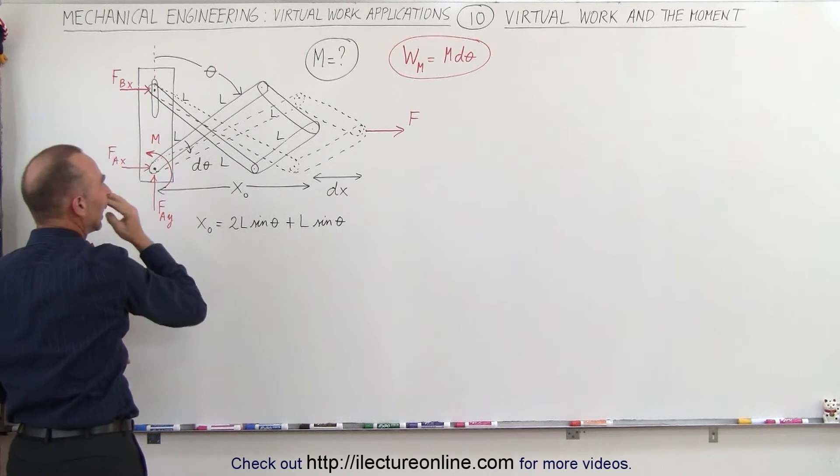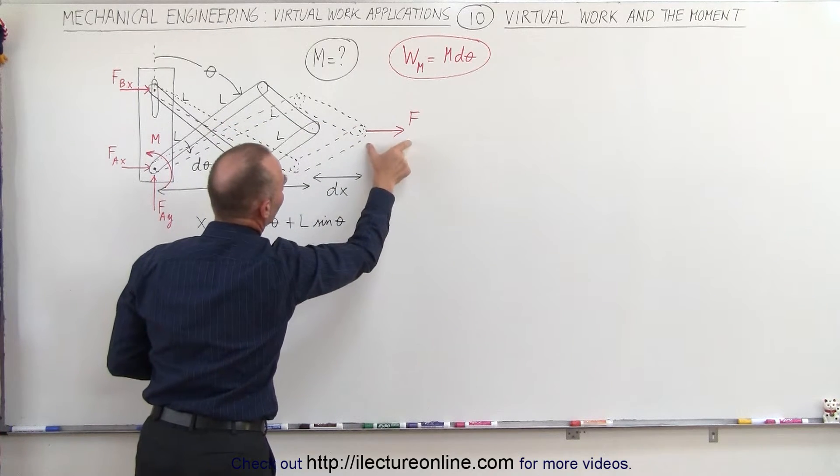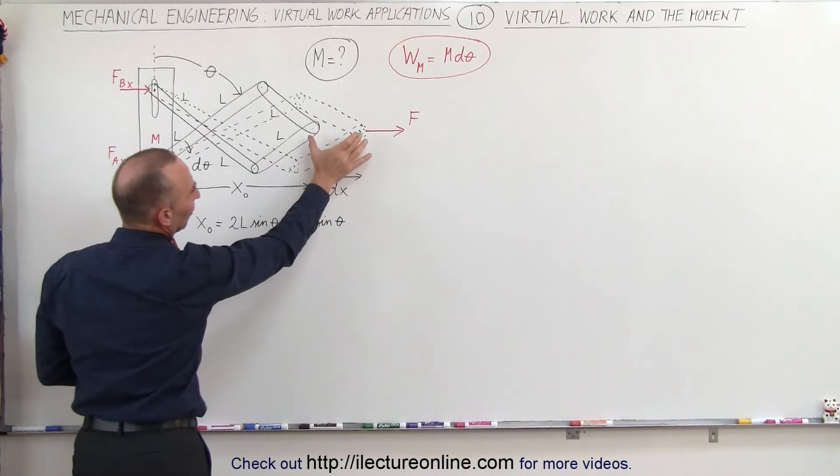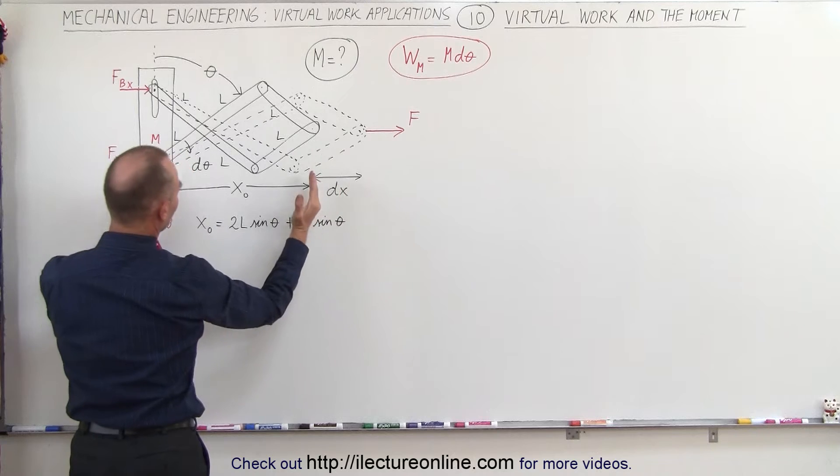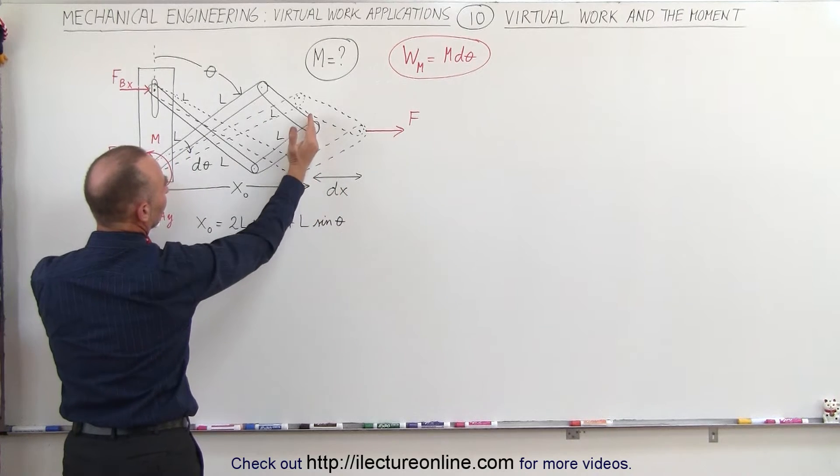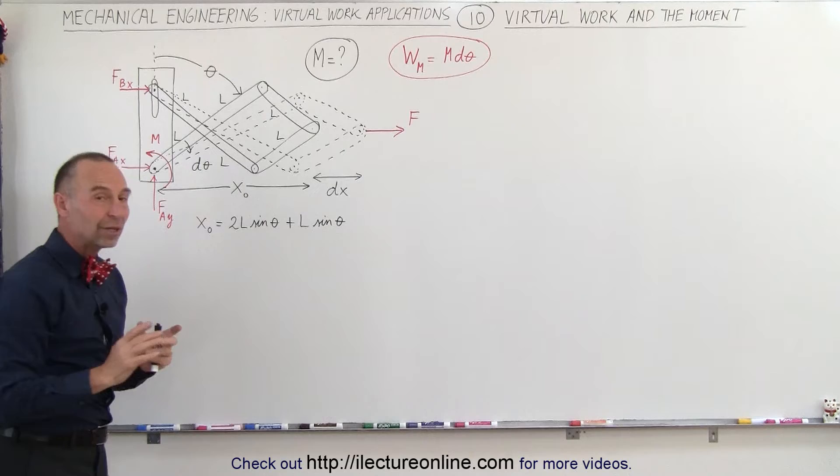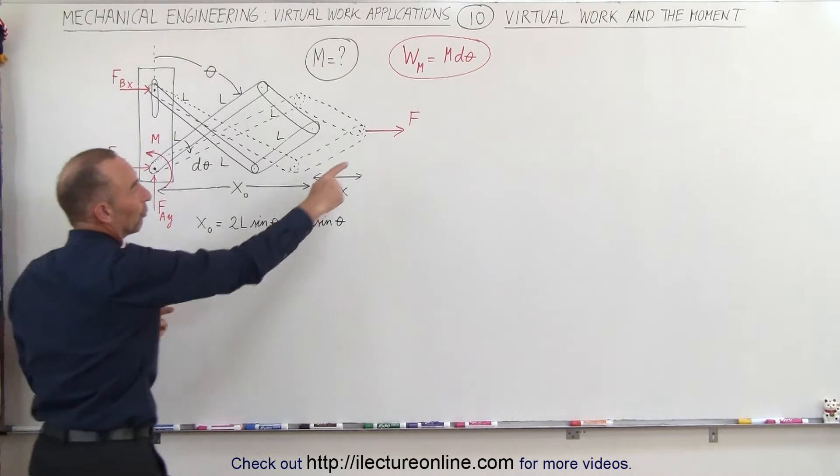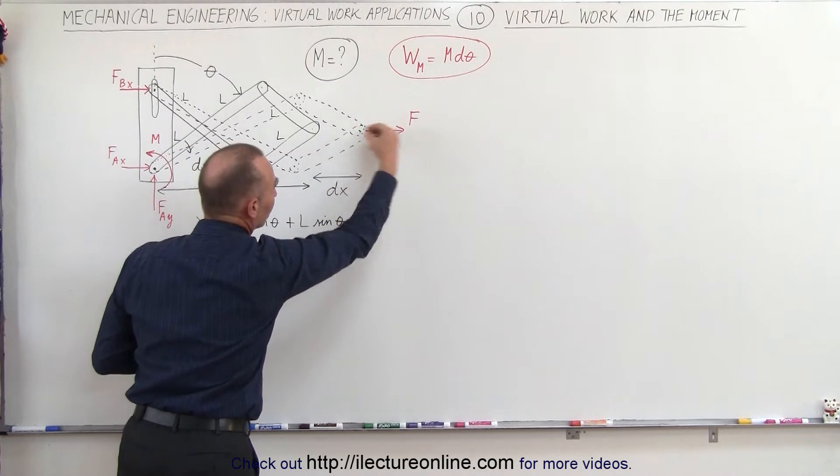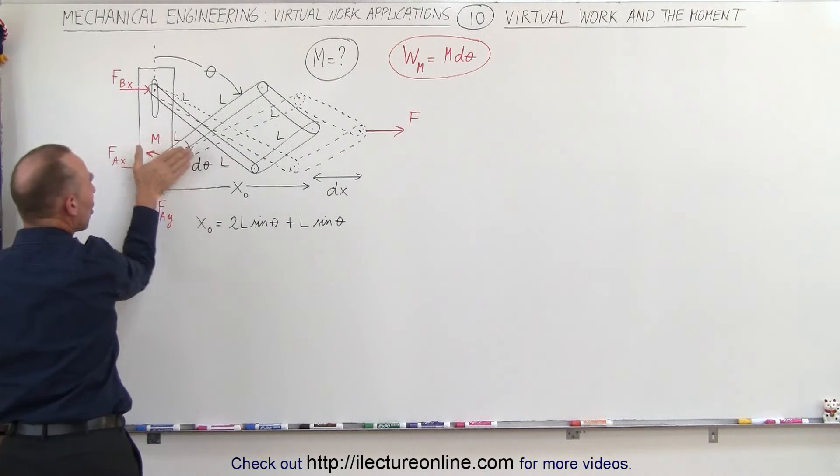You can only rotate this way and then we're pulling this out with a force F. Notice we go through a displacement of dx. This was the original position of that location right there and notice the only counteraction to the force by which we're pulling this contraption with is the moment here.